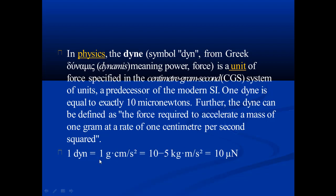One dyne is equal to one gram centimeter per second squared, which is equal to 10 to the power of negative 5 kilogram meter per second squared, or 10 micronewtons.